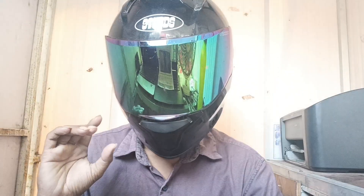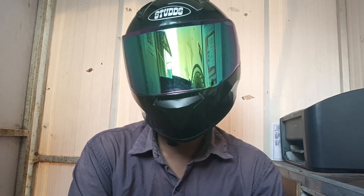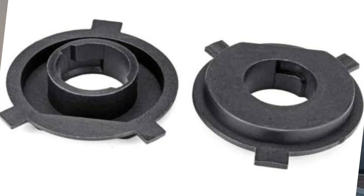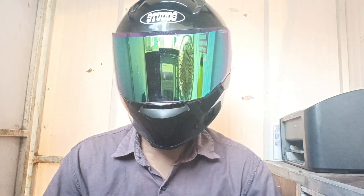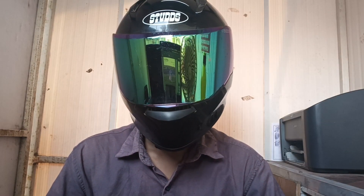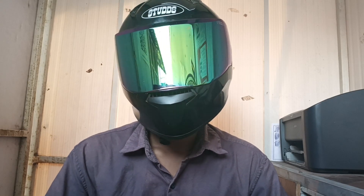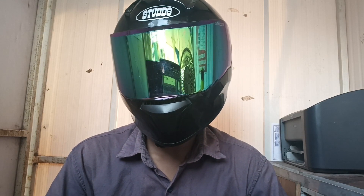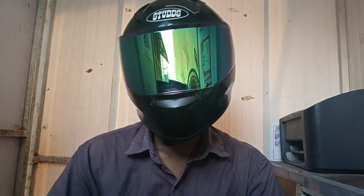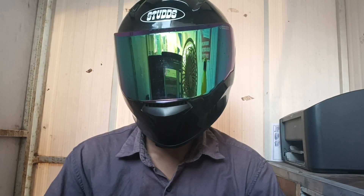Now, the topic of adapters. Every bulb has an adapter type. Old bikes like RX and Yezdi had a round-type bulb. Modern bikes come with H4 adapter, H1 adapter, and many other adapters in the market. If you buy an H1 bulb, you cannot fix it in an H4 dome. If you have an H4 dome, you need to buy an H4 bulb.